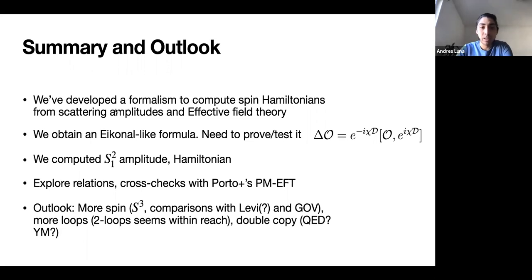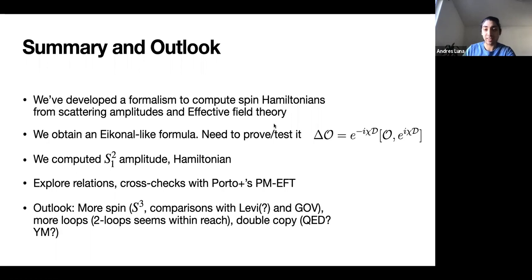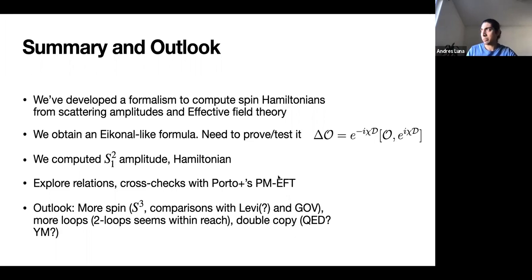That brings me to my summary and outlook. We have developed a formalism to compute spin Hamiltonians from scattering amplitudes, matching to an effective field theory, and from those Hamiltonians compute observables. We observed that we can express this in an eikonal-like formula to order G², we have a conjecture for higher orders that we need to prove or at least test by computing some higher loops, and we also have now the computation for spin-squared that was not in our previous paper. It will be very interesting to explore the relations and cross-checks with the PM-EFT approach of Porto and collaborators.